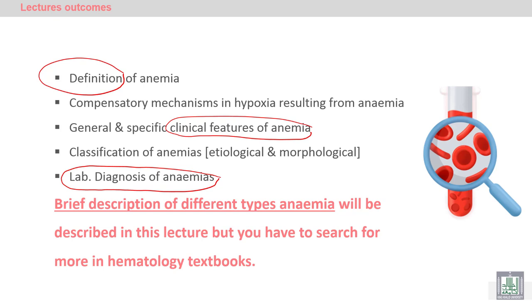In this lecture we will illustrate the different types of anemias — the classification of anemias — and we will know the compensatory mechanisms of hypoxia that lead to the clinical features of anemia. We will give a brief description of different types of anemia, but it is not sufficient for your learning; you have to search for more in hematology textbooks.